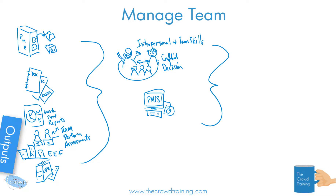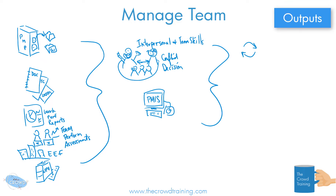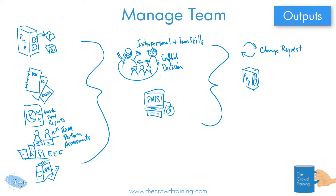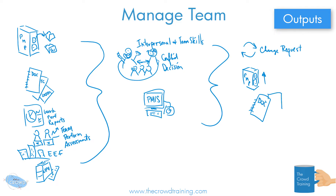Now the outputs. Sometimes if things are not working how they should be, you're going to have to request some changes — so change requests is one. Another one is updates to the project management plan. As the team is working or not working, that will be reflected in the plans. Maybe it changes the schedules, or the plan of what resources or the amount of resources we need — too many, not enough, need to pull them from elsewhere, different skill sets. That might also change the documents, like the resource calendar or lessons learned. So that's the plan updates and the document updates.